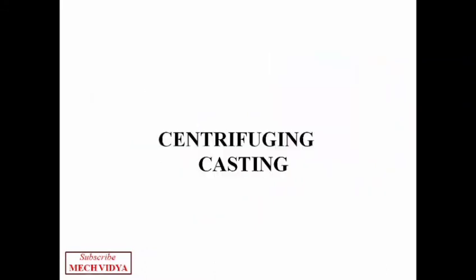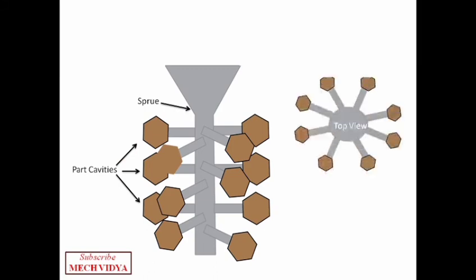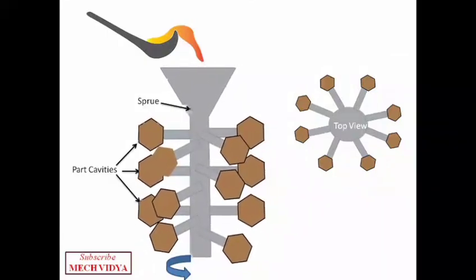After this, the last one in the list is centrifuging casting. Here we have a master sprue in which a number of pattern part cavities are fixed like the branches of a tree. So what happens is that when the molten metal is poured in the pouring cup, the entire assembly is rotated. And due to the effect of centrifugal force, the molten metal reaches to the farthest end of each cavity. So all the small cavities will be filled. Here the parts may not be axisymmetric, and we can cast even non-symmetric parts also. This method is actually used to produce small parts in large number.